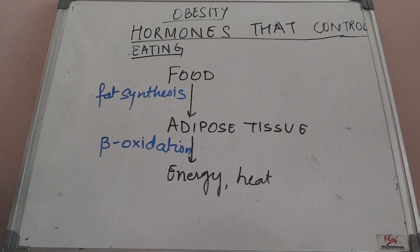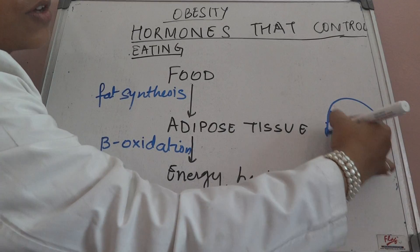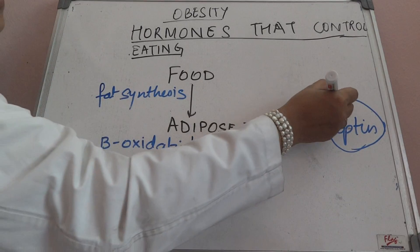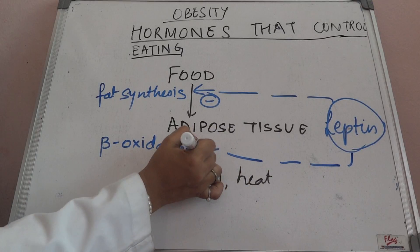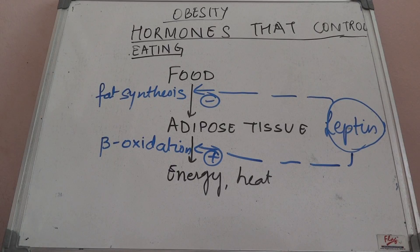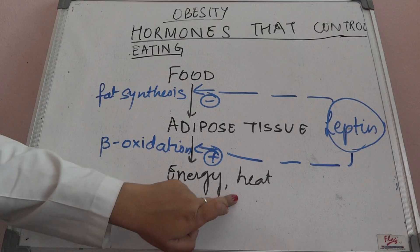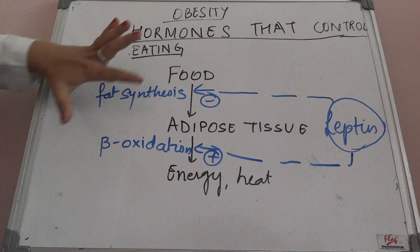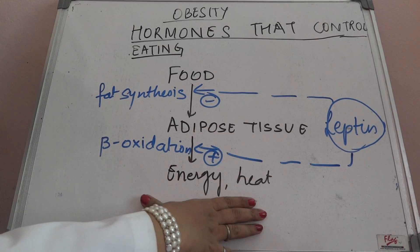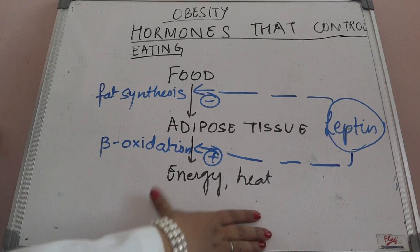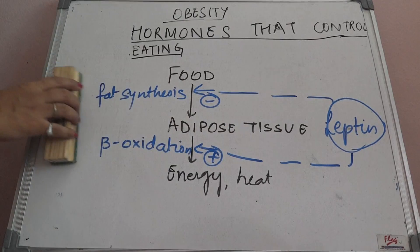The most important hormone that controls this is leptin. Leptin inhibits fat synthesis and stimulates beta oxidation. So the importance of leptin is that it increases beta oxidation in adipose tissue — whatever fat is accumulated is liberated as energy and heat. Leptin also inhibits fat synthesis, so no more fat accumulates in adipose tissue. Leptin essentially makes you thin.